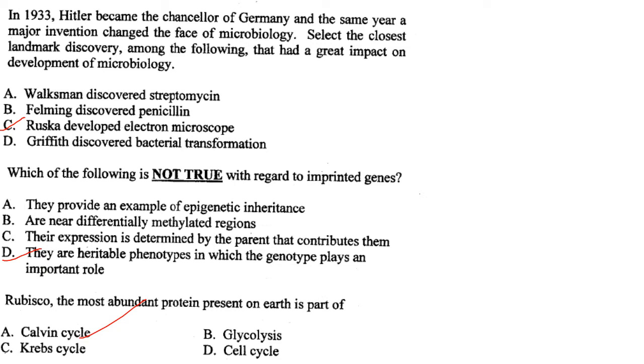Rubisco, the most abundant protein on earth, is a part of the Calvin cycle. Answer is option A.